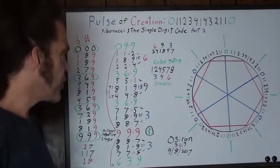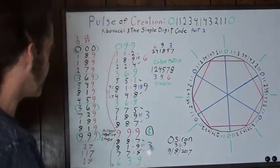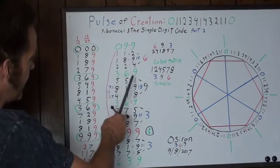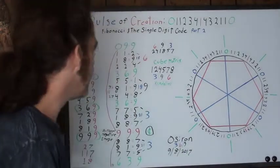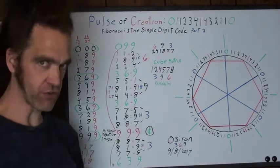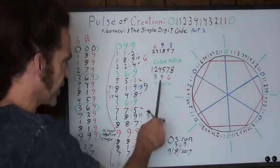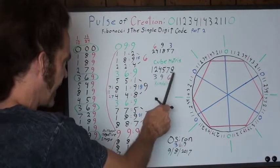But it also does more than that. All the numbers do some amazing things. If you recall from the octahedron Kundalini grid video, the cube matrix, the actual numbers that form the cube itself, are one, two, four, five, seven, and eight.